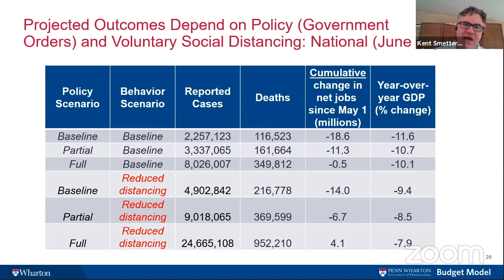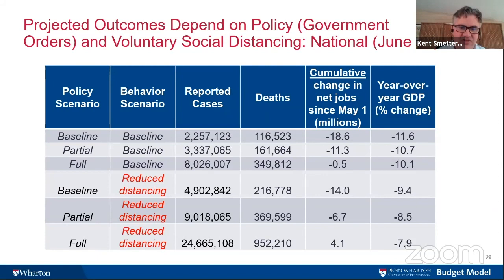We actually think the full scenario with reduced social distancing — going back to pre-pandemic behavior altogether — is an extreme case. This number is obviously quite high, though less than the 2.2 million deaths that Imperial College was projecting for the United States. We're not saying we believe this scenario will actually happen; we're simply saying if it were to happen, this is what we are projecting, with the uncertainty certainly acknowledged.